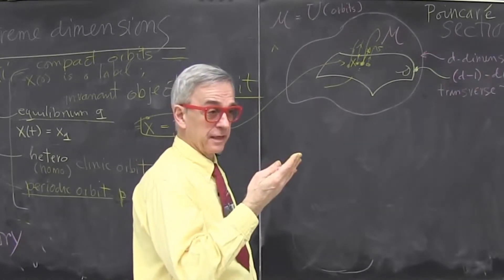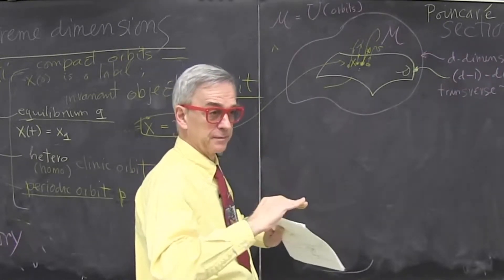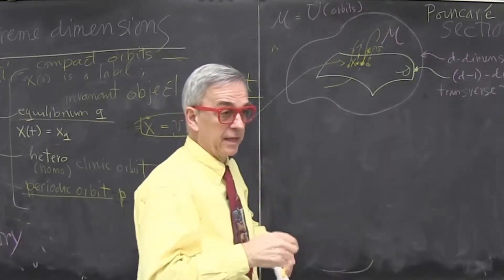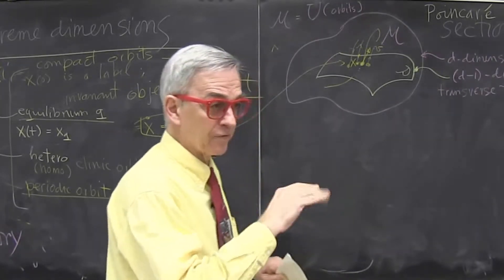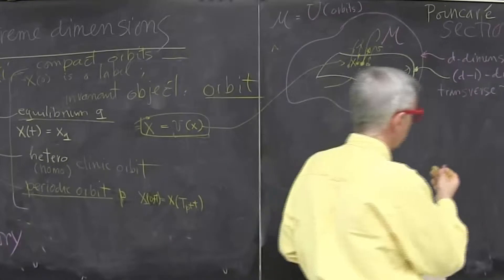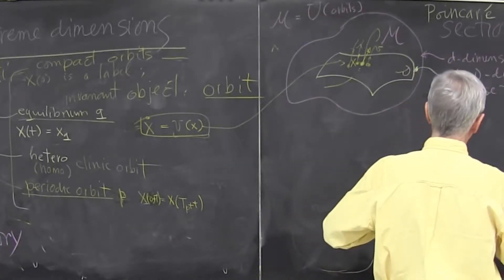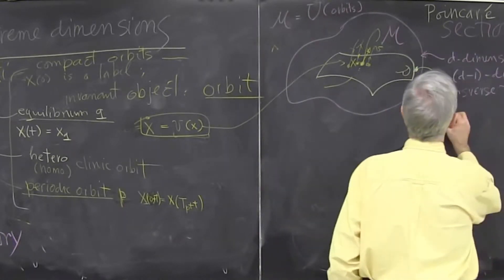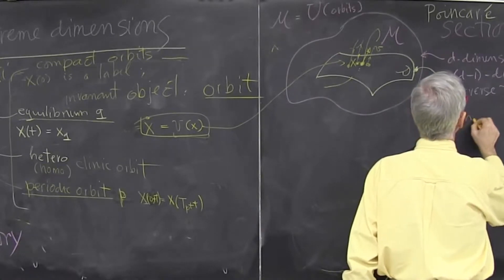So just slightly smaller than the original state space. So it doesn't seem like you're getting very much. You're in 100,000 dimensions, you lose one dimension. Turns out it's a very intelligent dimension you're taking. And what Poincaré's section really does, it's a change of coordinates. Local change of coordinates.